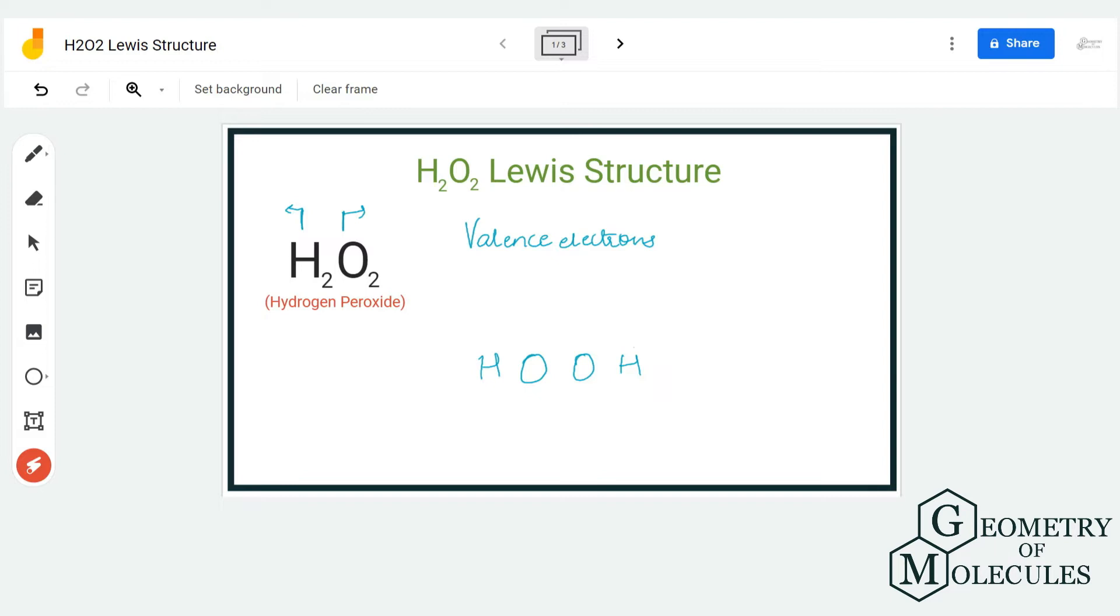To understand its Lewis structure, we are first going to look at the total number of valence electrons for this molecule. Hydrogen has one valence electron and oxygen has six valence electrons in its outer shell, but we have two hydrogen atoms and two oxygen atoms, so we have a total of 14 valence electrons for H2O2.